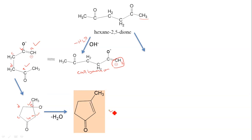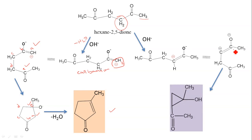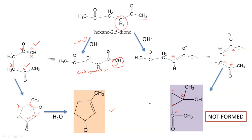The second option is removal of hydrogen from the CH2 group. We get a carbanion which on cyclization gives a product with carbons labeled A, B, C, D. However, this cyclization will not actually occur, and hence only the first product is formed. This second product is not formed.